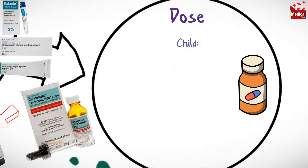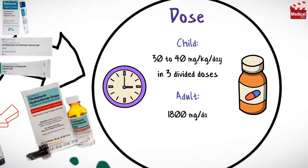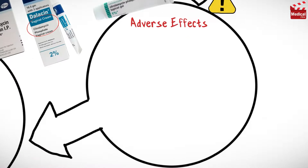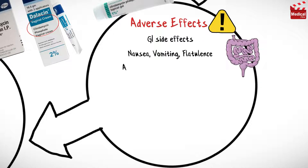The usual dosage of clindamycin for children is 30 to 40 milligrams per kilogram per day in three divided doses, and for adults 1800 milligrams per day in three divided doses. Clindamycin may cause gastrointestinal side effects such as nausea, vomiting, flatulence, anorexia, and esophagitis.